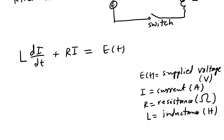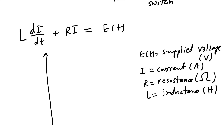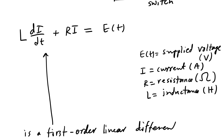If we look at that equation L·dI/dt + R·I = E(t), it is actually a first-order linear differential equation. In physics, we are interested in learning how to solve such equations for I, because instead of y we have I here, and dI/dt is like I prime.